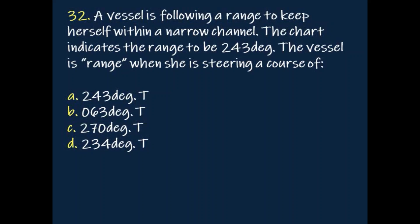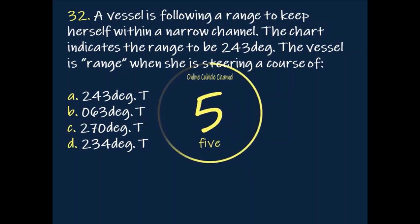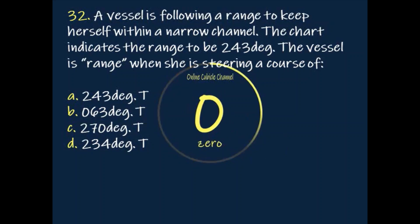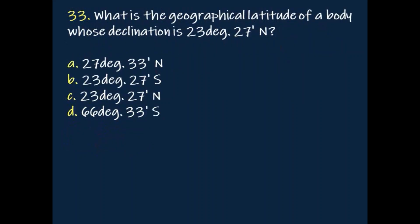Question: A vessel is following a range to keep herself within a narrow channel. The chart indicates the range to be 243 degrees. The vessel is on range when she is steering a course of? Answer: 243 degrees true.